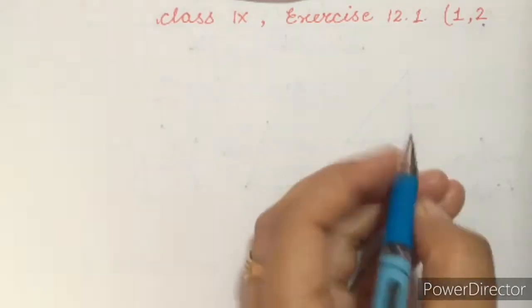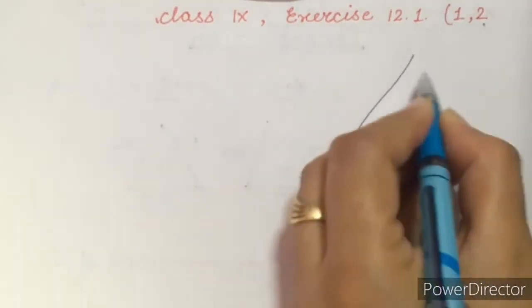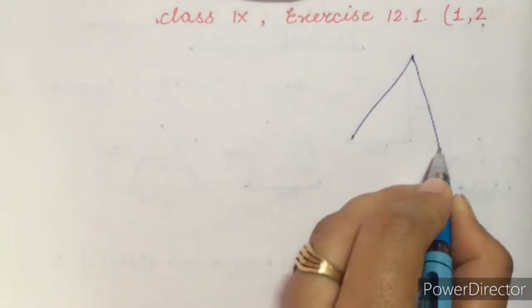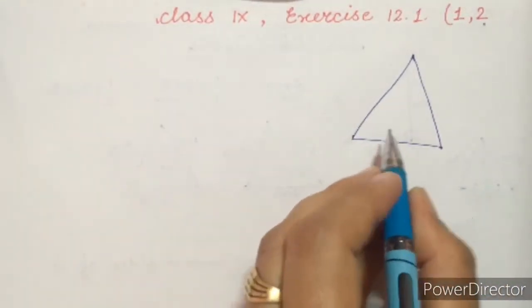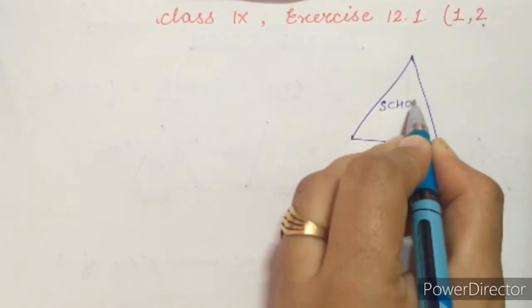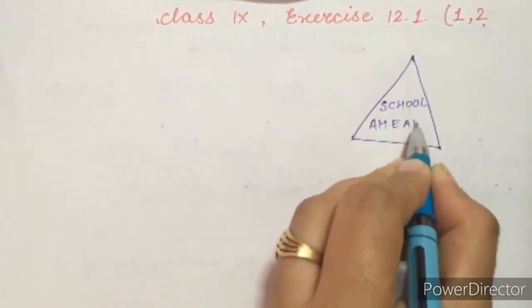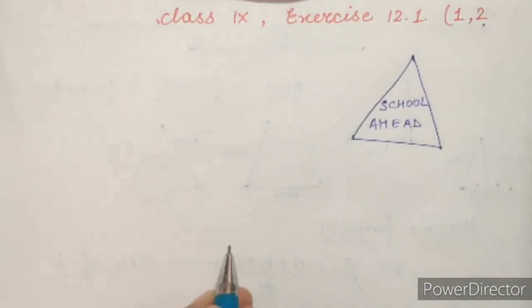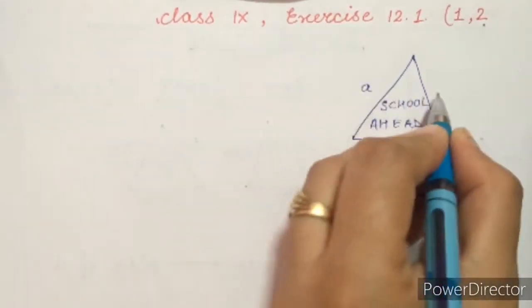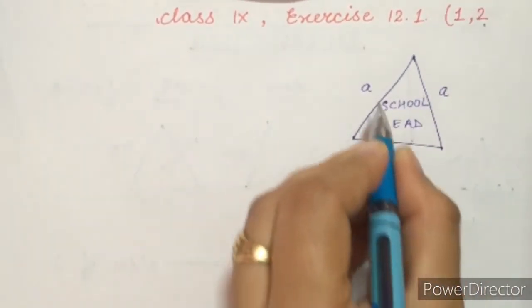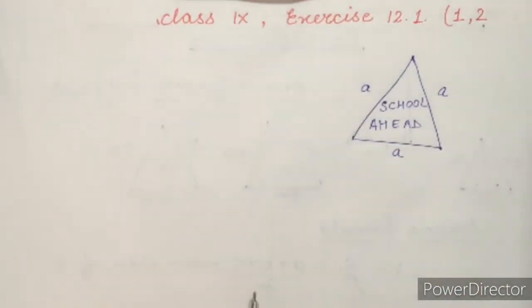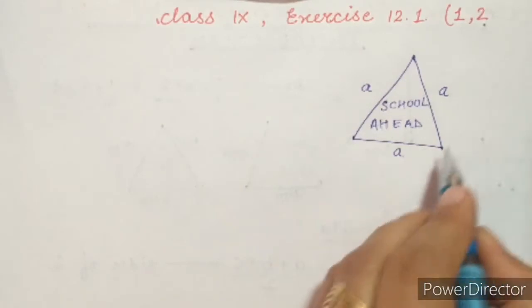Question number one says: a traffic signal board indicating 'School Ahead' is an equilateral triangle. The signal board is in the form of an equilateral triangle with sides a — all sides are the same. In the case of an equilateral triangle, sides a, b, and c are all equal. We have to find the area of the signal board.